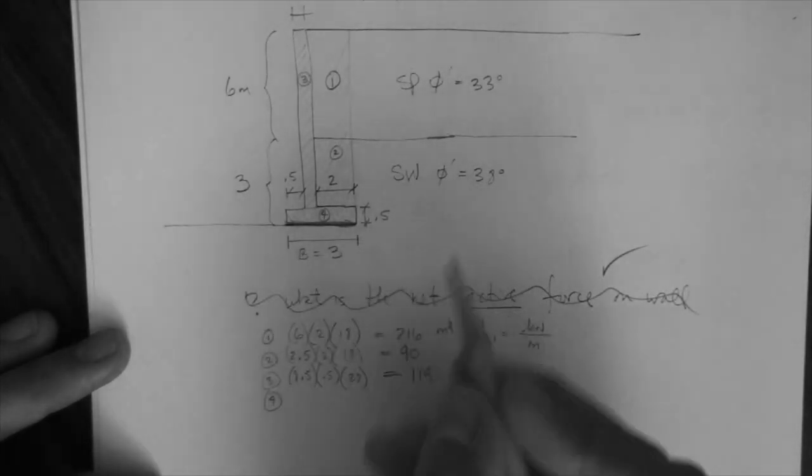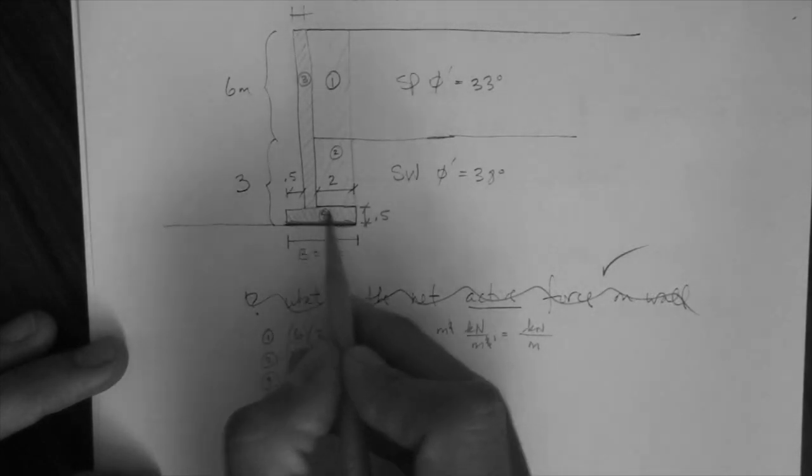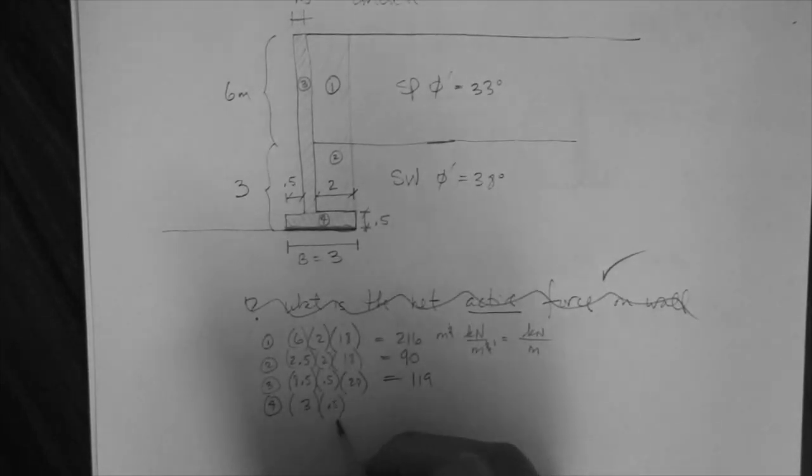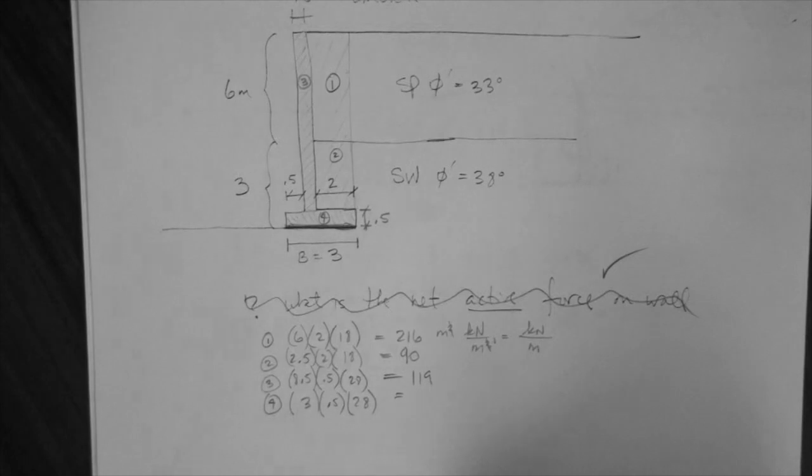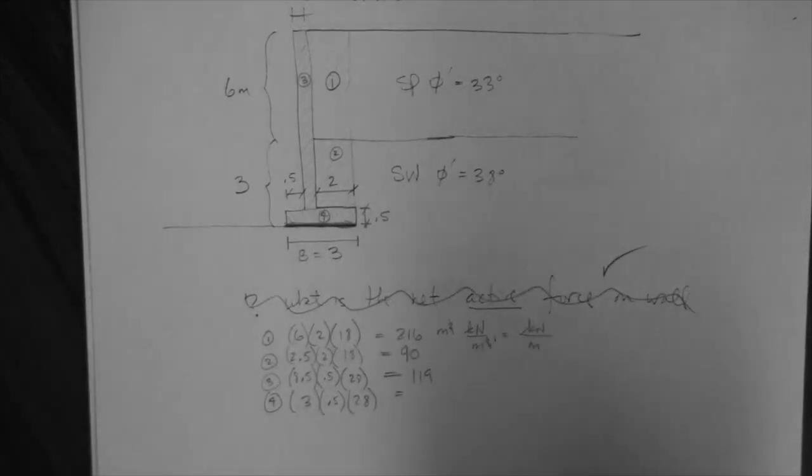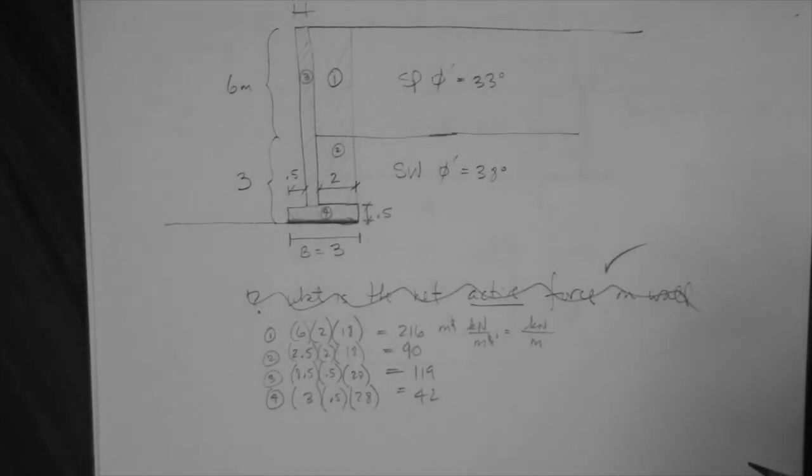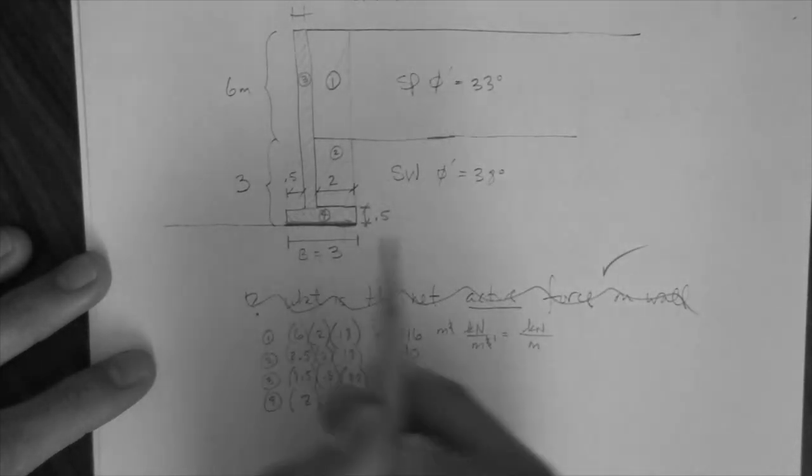And then the number four here is the footing. So the footing, the area as drawn here is 3 times 0.5, and it's made of concrete, 28. So 14 times 3, 42. 42 kilo newton per meter.